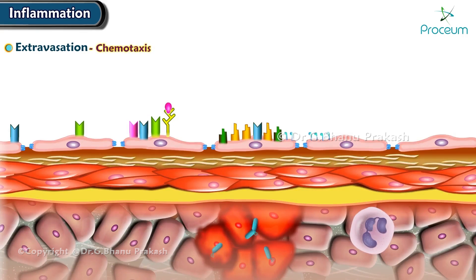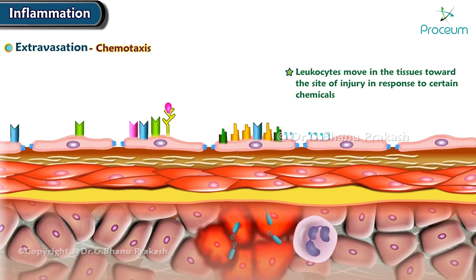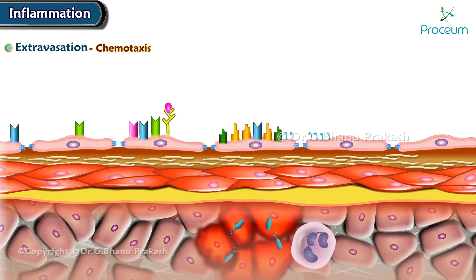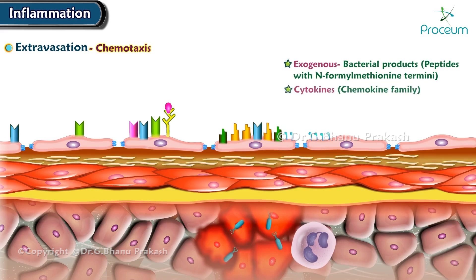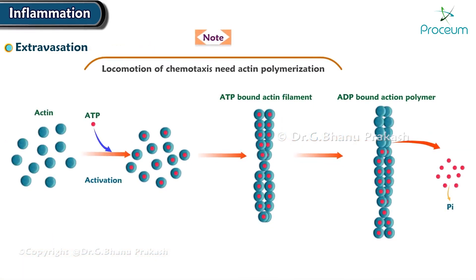The last cellular change is chemotaxis. After exiting circulation, leukocytes move in the tissues toward the site of injury in response to certain chemicals by a process called chemotaxis. This process involves exogenous bacterial products, particularly peptides with N-formylmethionine termini, cytokines especially those of the chemokine family, and endogenous products such as C5a, arachidonic acid metabolites LTB4, IL-1, TNF, and IL-8. Note that the locomotion of chemotaxis requires actin polymerization.